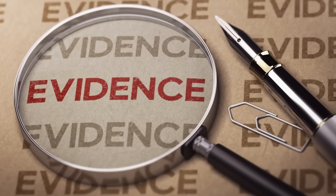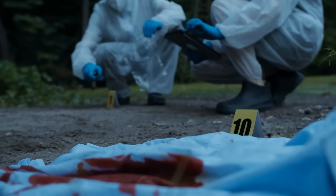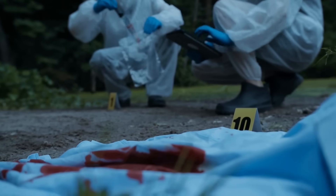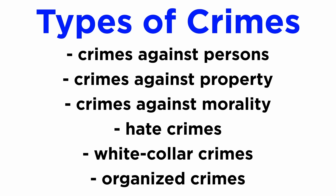This is where evidence comes in. Forensic science is used to establish actus reus and mens rea by analyzing evidence present on the scene, followed by establishing the specific intent of the suspect. Now that we have understood the basics of crime, let us classify crime into different types. According to their nature, crimes can be classified into crimes against persons, crimes against property, crimes against morality, hate crimes, white-collar crimes, and organized crimes.